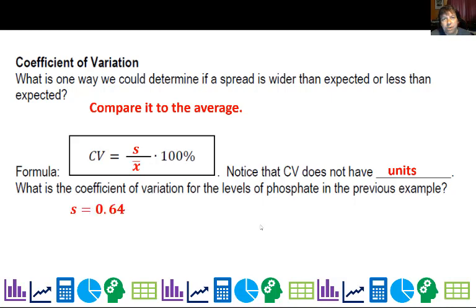So what is the coefficient of variation for the levels of phosphate in the example we just did? Well, we know that our standard deviation is 0.64 and x bar is 5.4. So when I go 0.64 divided by 5.4 times 100%, I get 0.119 or 11.9%. So our spread is about 12% of our mean.